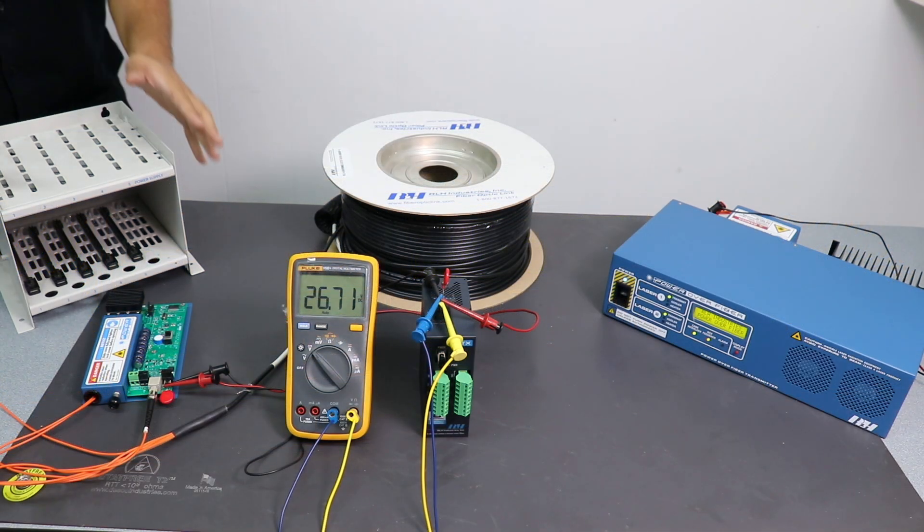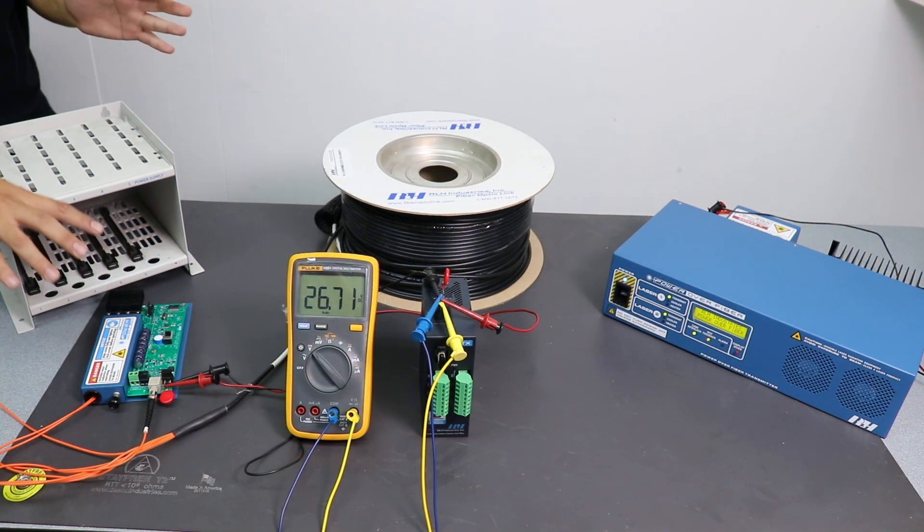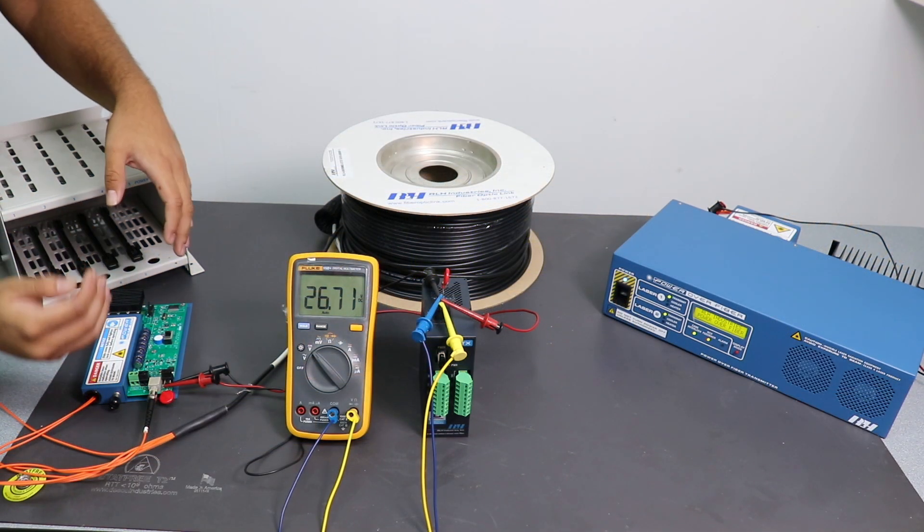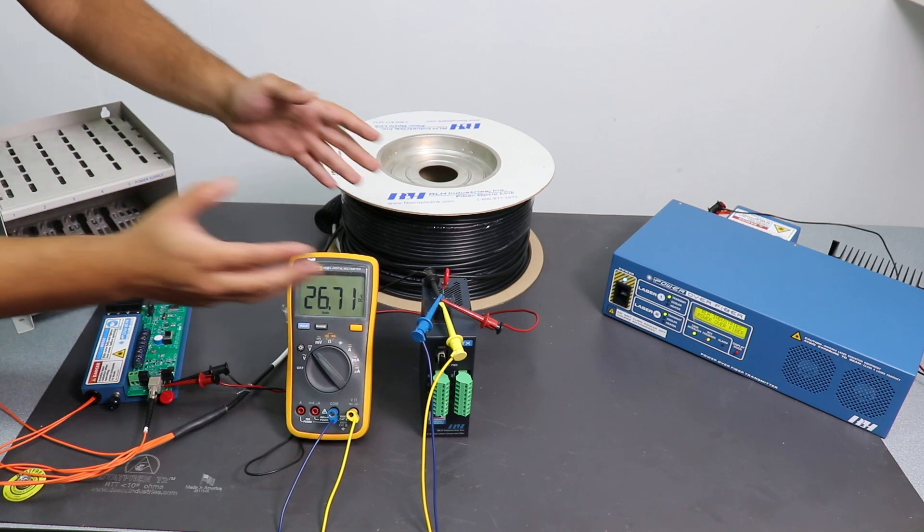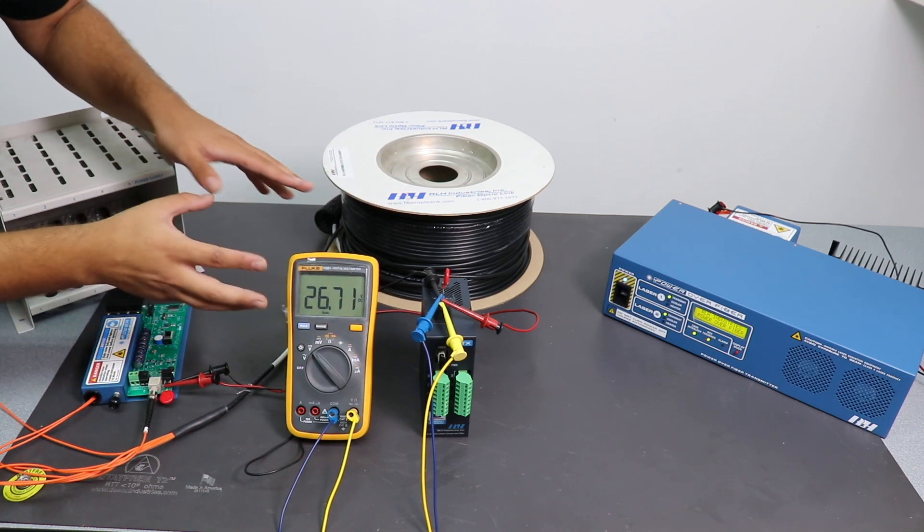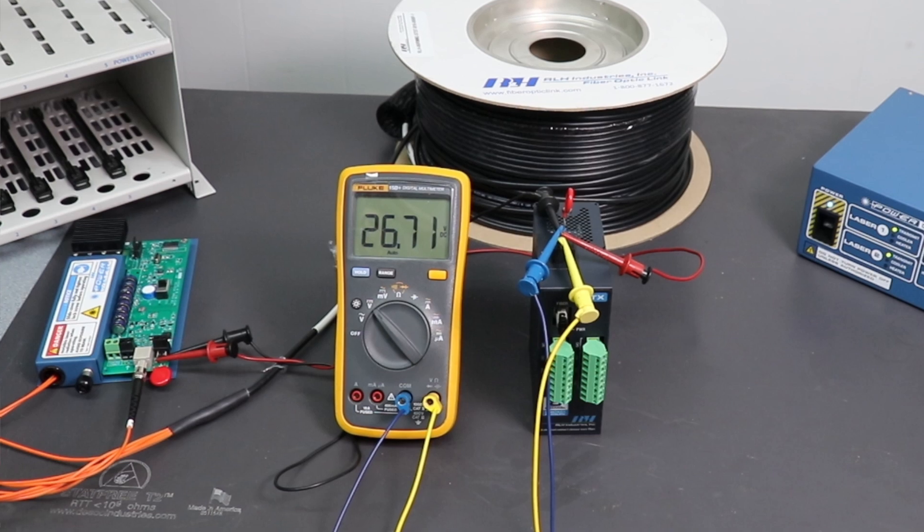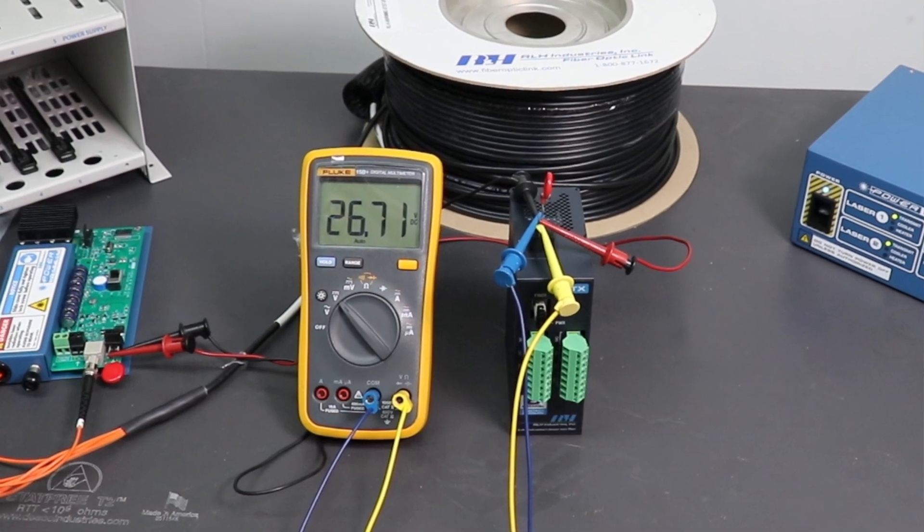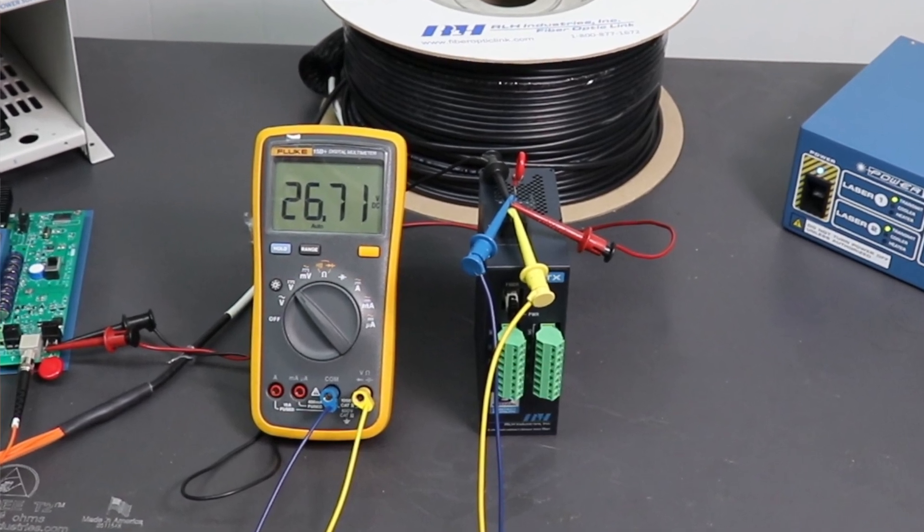Coming at this side now, we have your RX card over here. Now, I connected this RX card to our own contact closure system over here. And also, using a multimeter, I'm showing what voltage you're going to see on this side. So I'm seeing 26.71 volts on this side.